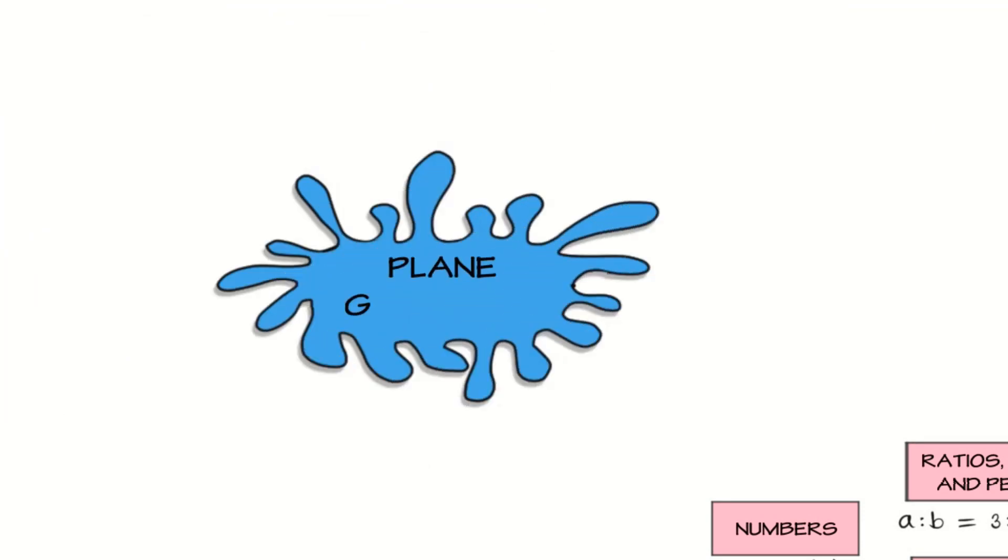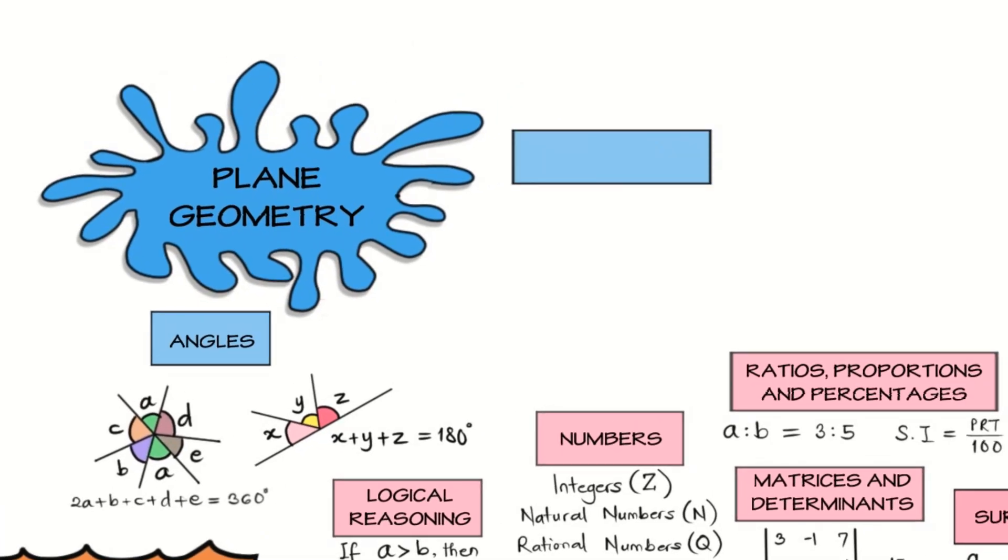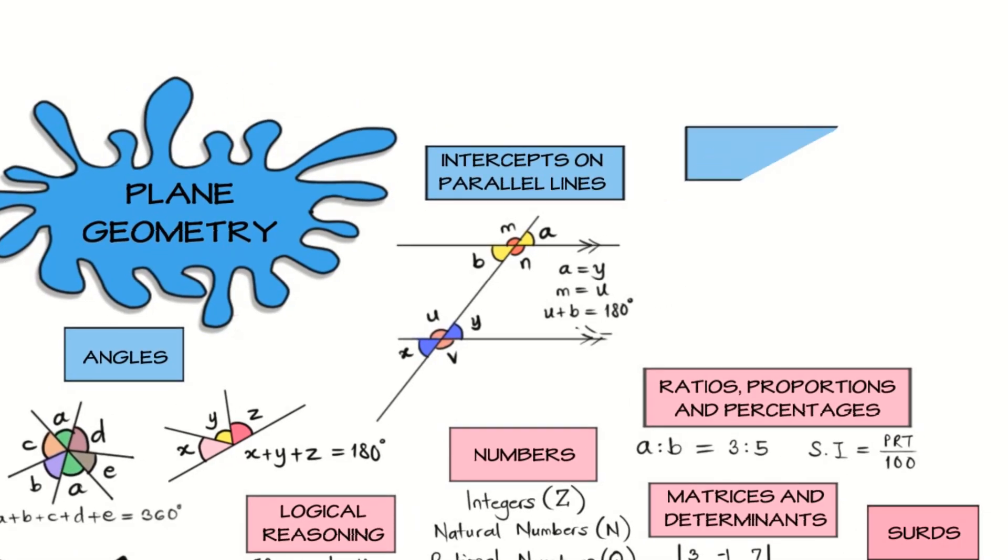And then next, WAEC expects that we should know about plane geometry. When we're talking about plane geometry, we are starting off with angles. Angles at a point normally add up to 360. We're expected to know that. Then what is the sum of angles on a line? What is the angle that is at right angle? We should also know acute, obtuse, and reflex angles. Then the intercepts on two parallel lines are supposed to also be at our fingertips. In that case, we can talk about alternate angles, corresponding angles, the intercept theorem, and so on. Triangles and polygons are also coming into this. Then we should know what is the sum of the angles of a triangle. We should know what is the sum of the exterior angles of a triangle. We need to know the properties of special triangles.